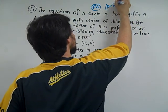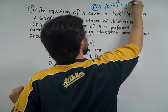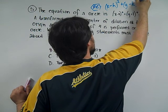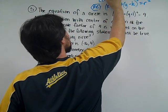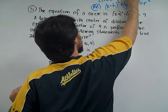x minus h squared plus y minus k squared equals the radius squared, where the center is h, k.